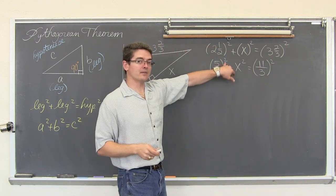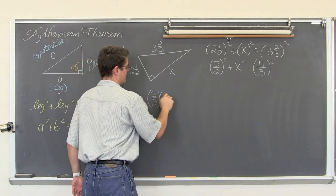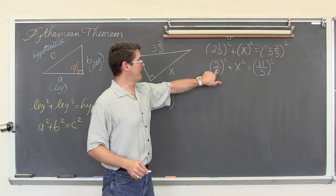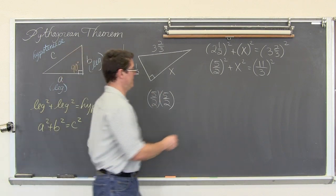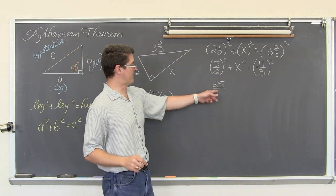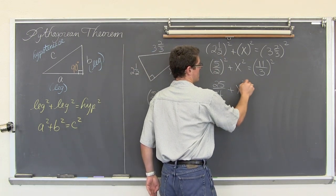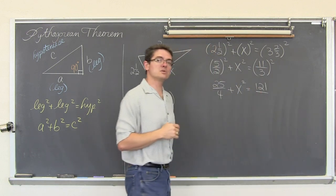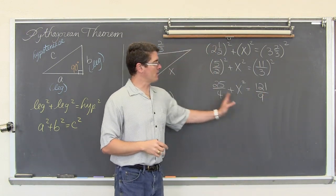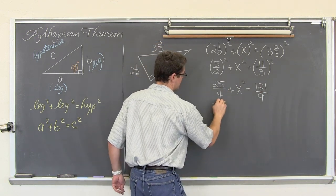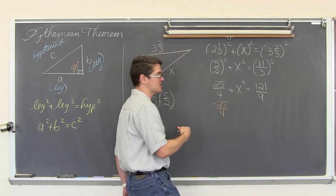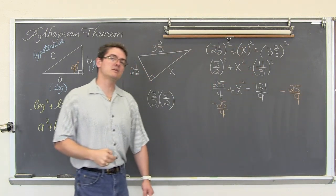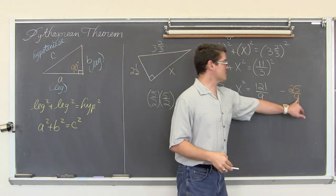We square the fraction by squaring both the numerator and the denominator. So 5 over 2 squared is 25 over 4. Plus x squared equals 11 squared over 3 squared, which is 121 over 9. We need to move the 25 over 4 to the other side by subtracting it. We need common denominators to subtract these fractions — the lowest common multiple between 9 and 4.